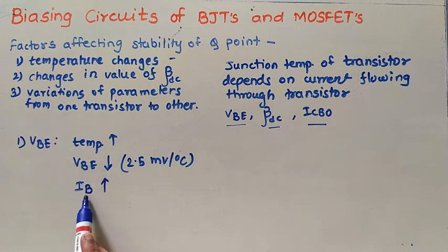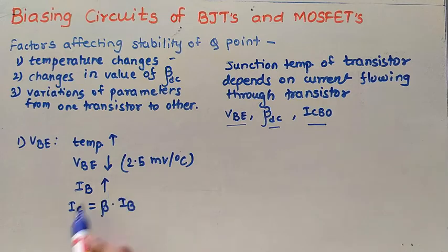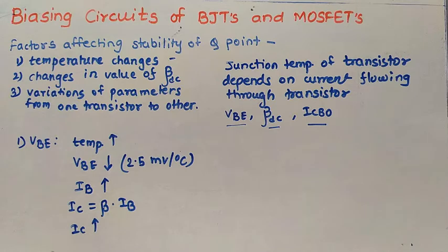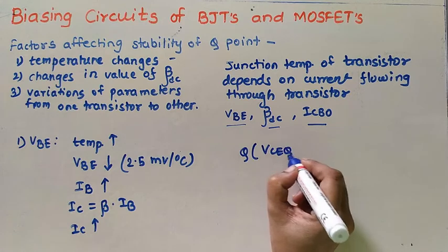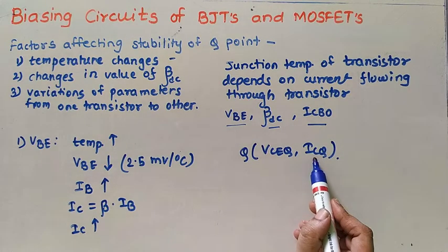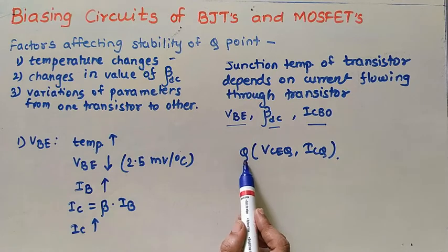When VBE decreases, IB current will increase, and we know that there is a relation between IC and IB: IC is equal to beta into IB. So if the IB current is going to increase, the IC current will also increase. And if the IC current will increase, our Q point will change — the position of Q point will change on the DC load line, because the coordinates of Q point are VCE_Q and IC_Q. So if collector current changes, the position of Q point also changes. By this way, the change in temperature can affect the position of Q point on DC load line.